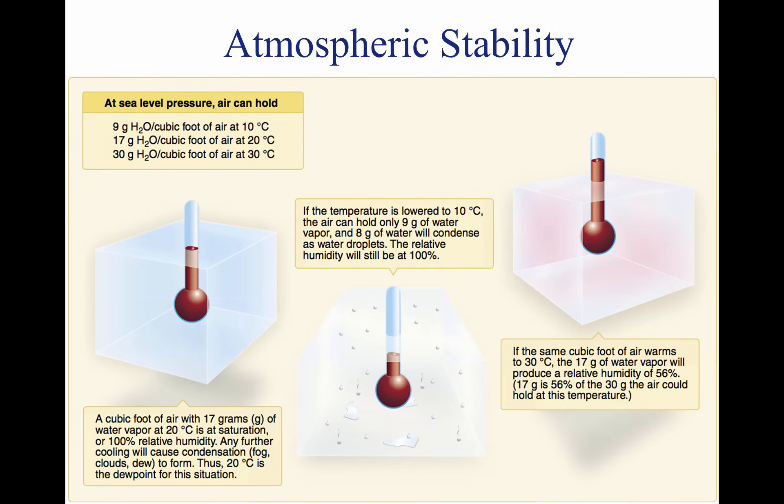The stability of the atmosphere depends on its ability to resist vertical motion. A stable atmosphere makes vertical movement difficult, and small vertical disturbances dampen out and disappear. In an unstable atmosphere, small vertical air movements tend to become larger, resulting in turbulent airflow and convective activity.